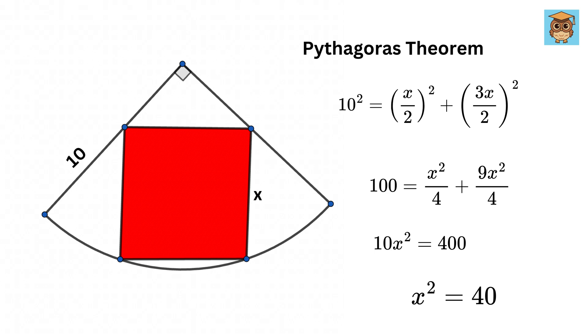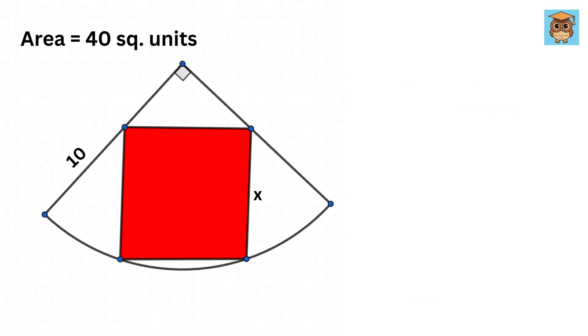Our question was to find the area of this inscribed square, and since its side is X, therefore the area will be X squared, or 40. This is our answer. Don't forget to put the square units.